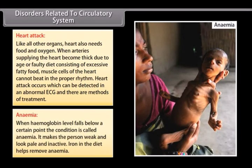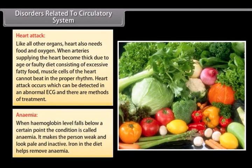Anemia. When hemoglobin level falls below a certain point, the condition is called anemia. It makes the person weak and look pale and inactive. Iron in the diet helps remove anemia.